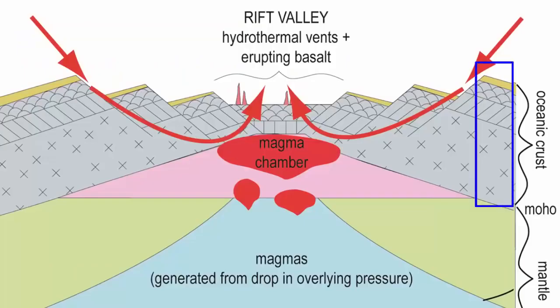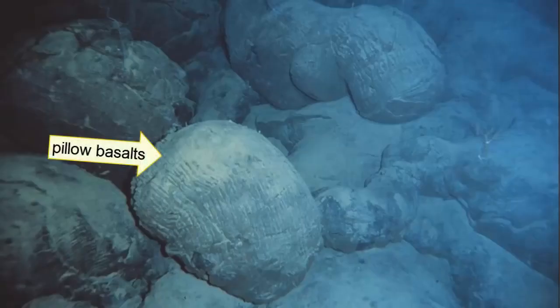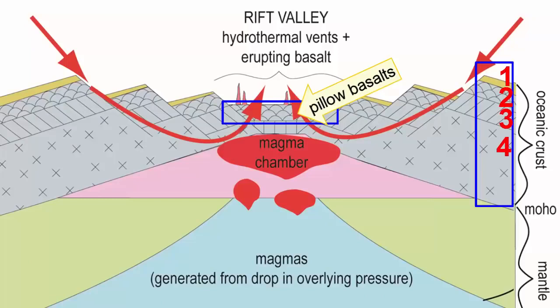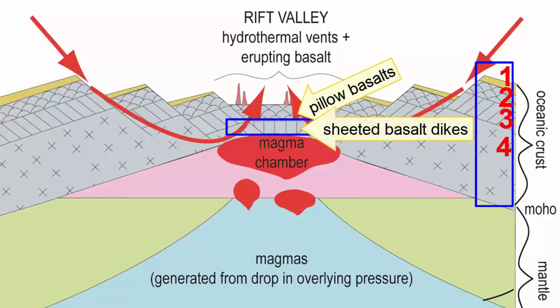The new ocean crust that forms at these ocean ridges consists of four main layers. The magma that erupts on the seafloor cools quickly under high-pressure, cold water, and forms structures that look similar to hardened toothpaste squirted out of a tube — they're called pillow basalts. The cracks in the crust that fed the magmas to the surface cool to form vertical walls of basalt called sheeted basalt dikes.